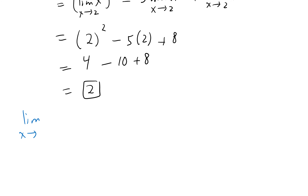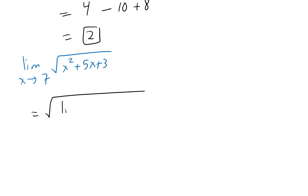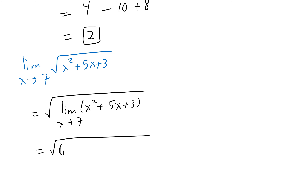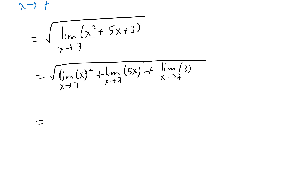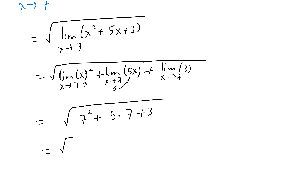Another example: as x goes to 7, find the limit of the square root of x² + 5x + 3. The way this works is you move the limit inside the square root, then apply the limit to each term — limit of the first, second, and third terms as x approaches 7. Taking the 5 out, you calculate 7² + 5(7) + 3, giving the square root of 87.